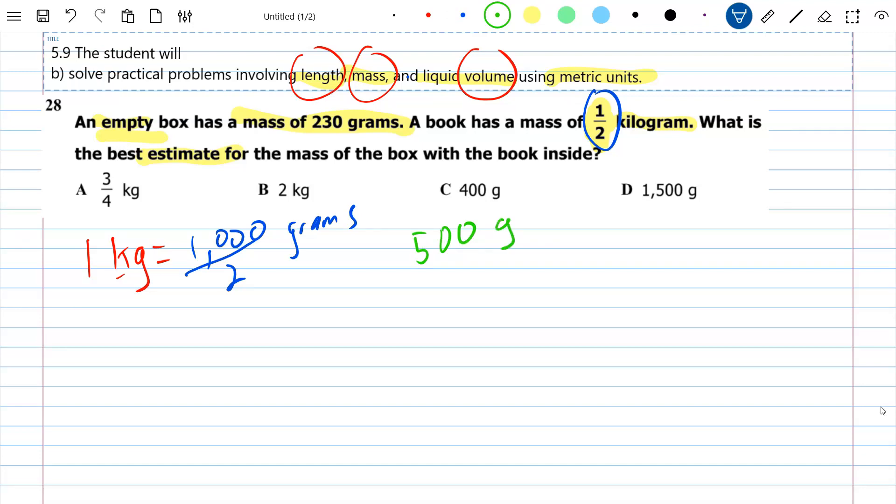Now what did they already give us? Well they already gave us 230 grams. So now I'm just going to go ahead and do some quick addition here. So I've got 730 grams.